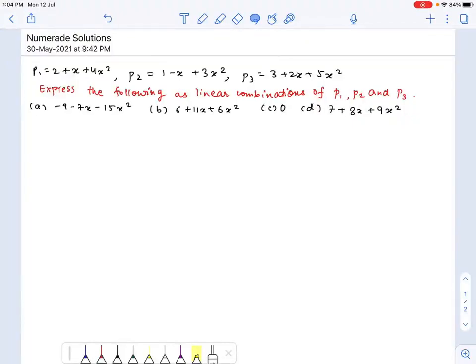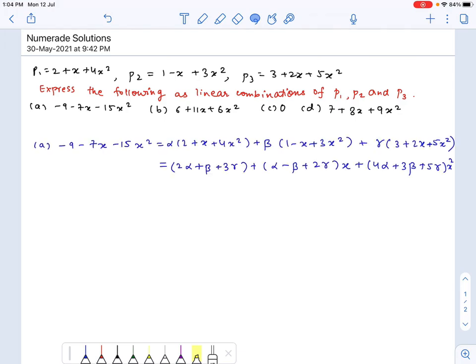In this problem we have three polynomials p1, p2, p3 and we have to express the following polynomials as linear combinations of these three polynomials. So let's start with the first one. I have written down this polynomial in the terms of a linear combination of p1, p2, p3 with coefficients alpha, beta, and gamma and that gives me a set of equations.